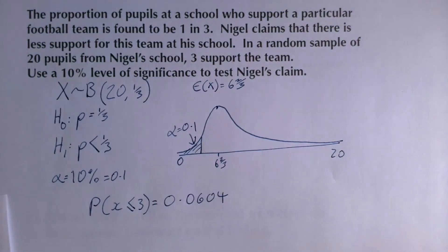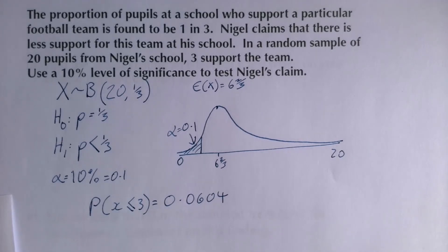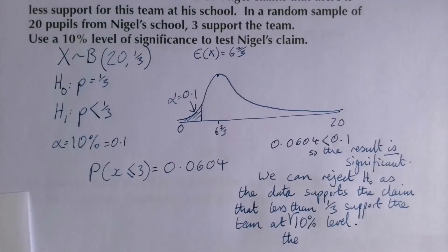0.0604 is less than 10%, so we can reject the null hypothesis. There is sufficient evidence to suggest that the team is less popular at Nigel's school at the 10% significance level.